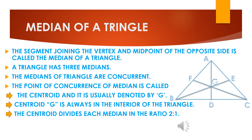The medians of a triangle are concurrent. You can see they are passing through the same point, named G. The point of concurrence of medians is called the centroid and is usually denoted by letter G. Centroid G is always in the interior of the triangle — it does not depend upon the type of triangle, whether it is acute, right, or obtuse. Centroid will always lie in the interior. The centroid divides each median in the ratio 2 is to 1.